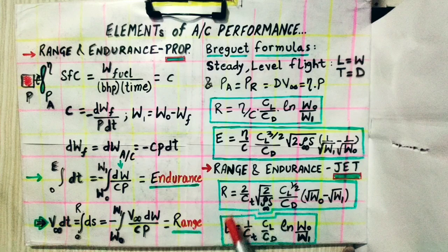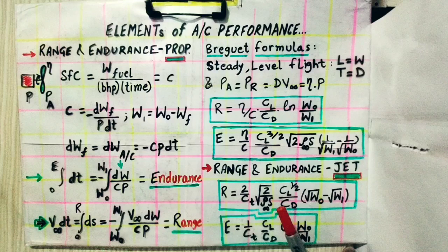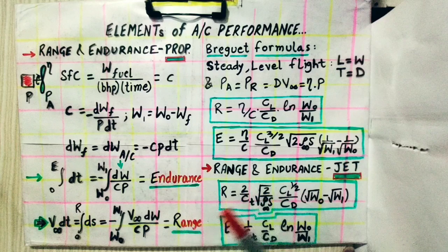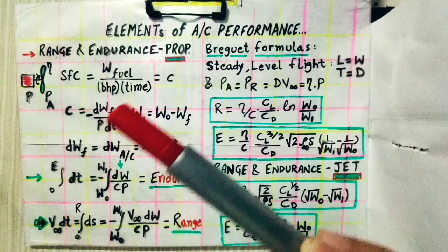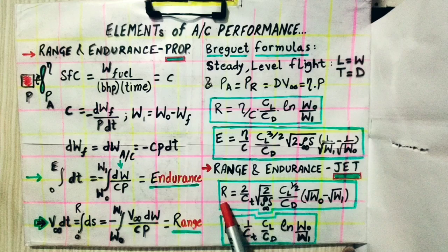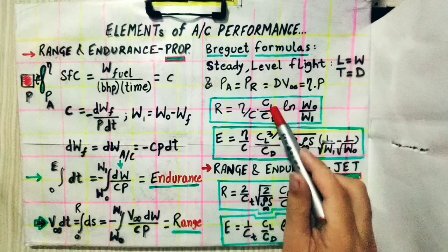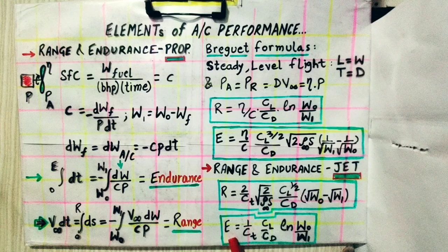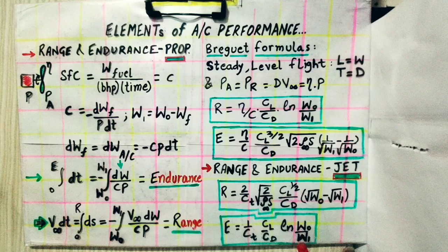For a jet aircraft, range depends on altitude: the higher the altitude, the greater the range (within the atmosphere where jet operation is valid). Range is worst at sea level and increases with altitude. Endurance of a jet aircraft does not depend on altitude. For maximum range, C_L^(1/2)/C_D must be maximized; for maximum endurance, C_L/C_D must be maximized, which occurs at minimum thrust required.